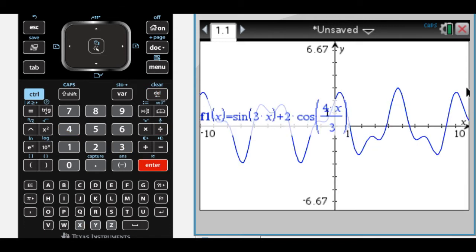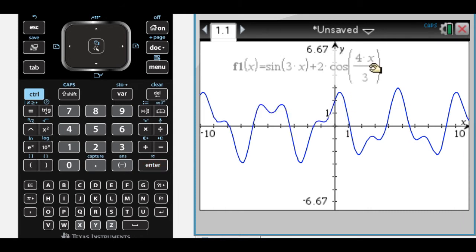I get kind of a weird looking function, and I want to find the period of this, so let me get rid of that label.